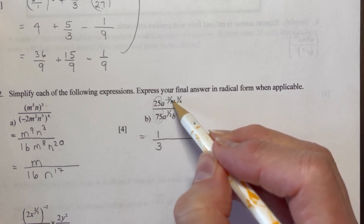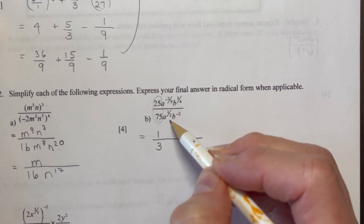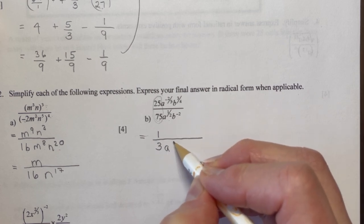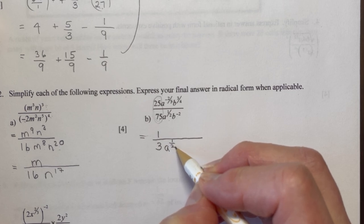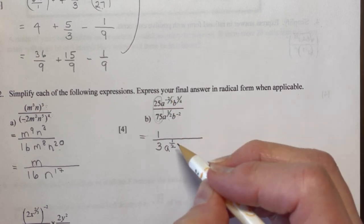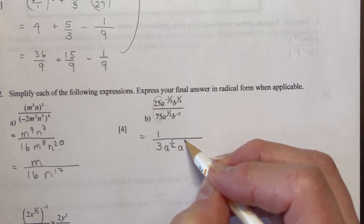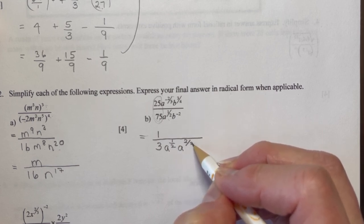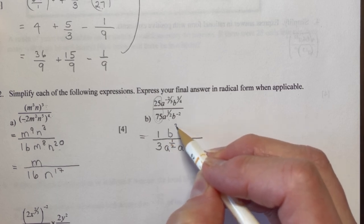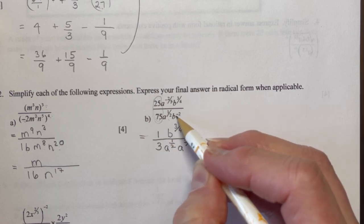So this is a negative exponent, so I'm going to put that one into the denominator. I shouldn't really call them letters, I should call them variables. So I have a to the one-half, that was here. I'm going to bring this to the denominator to make it positive. So a to the two-thirds. And in the numerator, I have b to the three-quarters. And this b down here, if I bring it up, becomes positive. So b to the minus two.